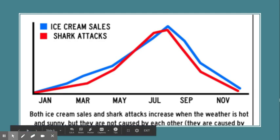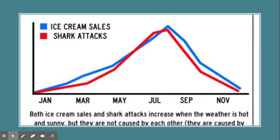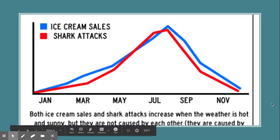This one: ice cream sales and shark attacks have a very high correlation. As ice cream sales increase, we see more shark attacks. You can think through this — we're buying more ice cream at the same time of year that we're in the water, which increases the possibility of shark attacks. But not because eating ice cream makes you more likely to be attacked by a shark. These examples show why related variables don't cause each other — and they'll ask you this on the AP exam.